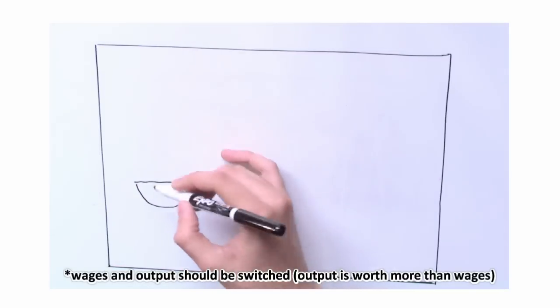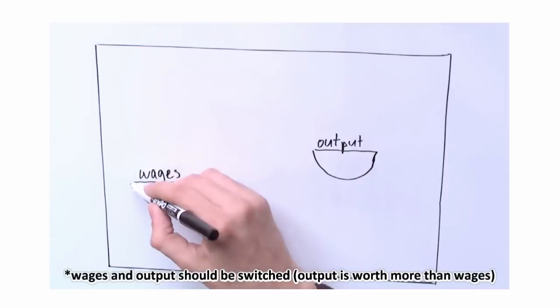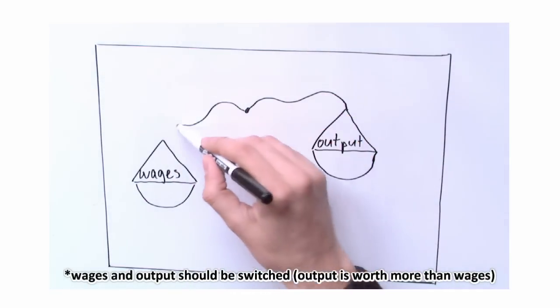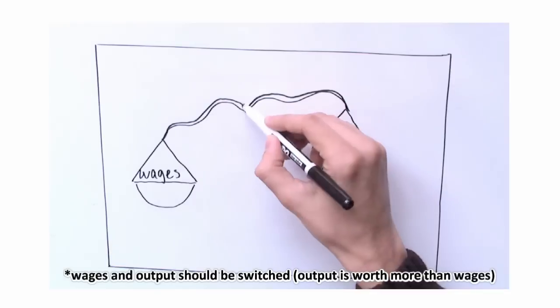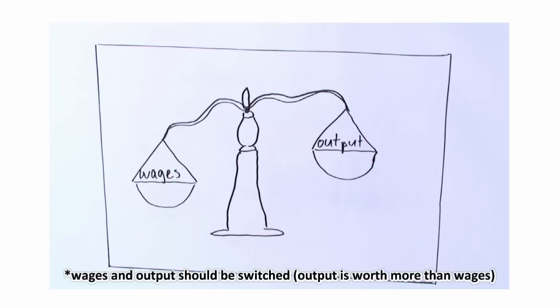However, in order to make a profit, the capitalist has to pay the worker less than the value of what he or she is capable of producing. If the capitalist didn't do this, his profits would flatline. So, we see that profit is based on and necessarily needs the incomplete compensation for the labor provided by the worker.